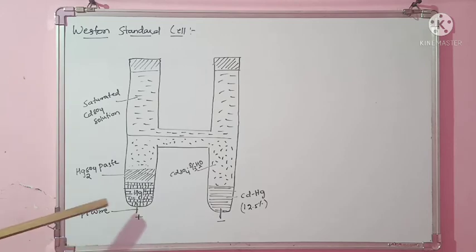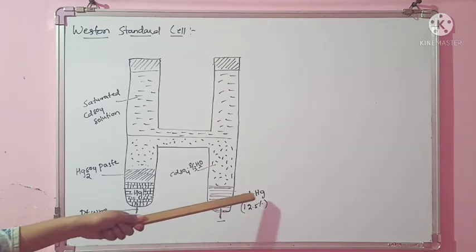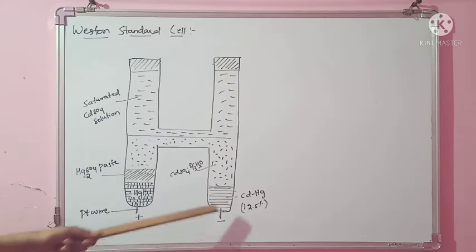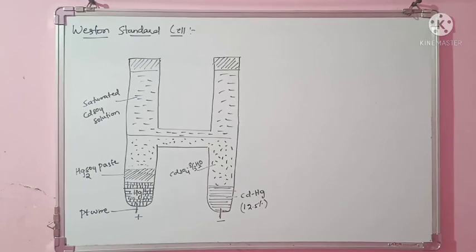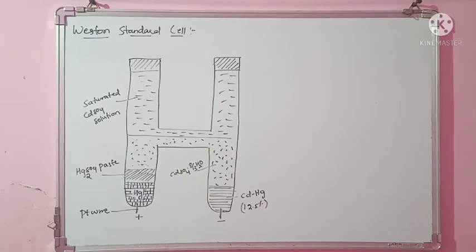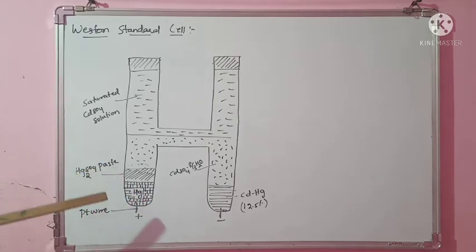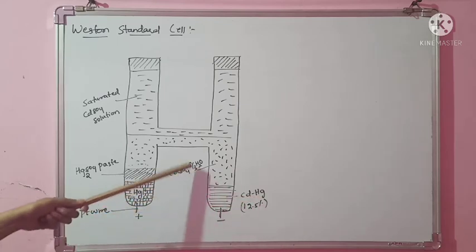The mercury limb is also covered with Hg₂SO₄ paste — that is mercury sulfate. On the other side, cadmium amalgam is taken. When mercury is used, it forms an amalgam. Here, cadmium amalgam — that is 12.5 percent cadmium — is taken in the other limb and serves as the negative electrode. Above the cadmium amalgam, hydrated cadmium sulfate is spread. So mercury is in Hg₂SO₄ paste, and cadmium amalgam (CdHg) is in hydrated cadmium sulfate.